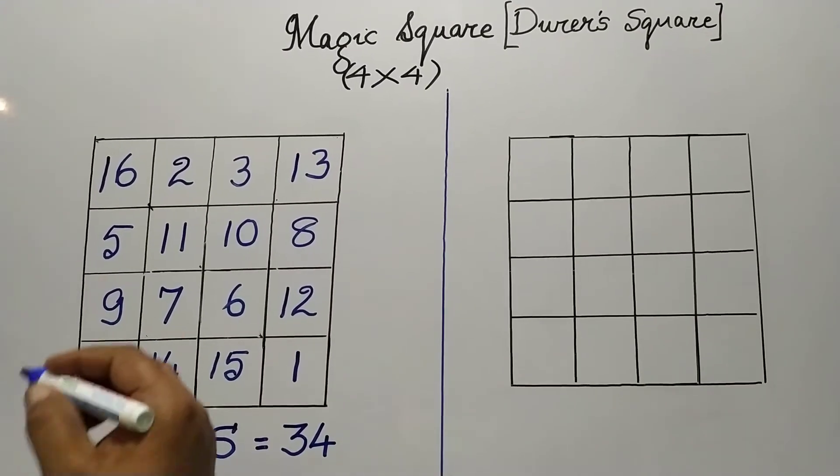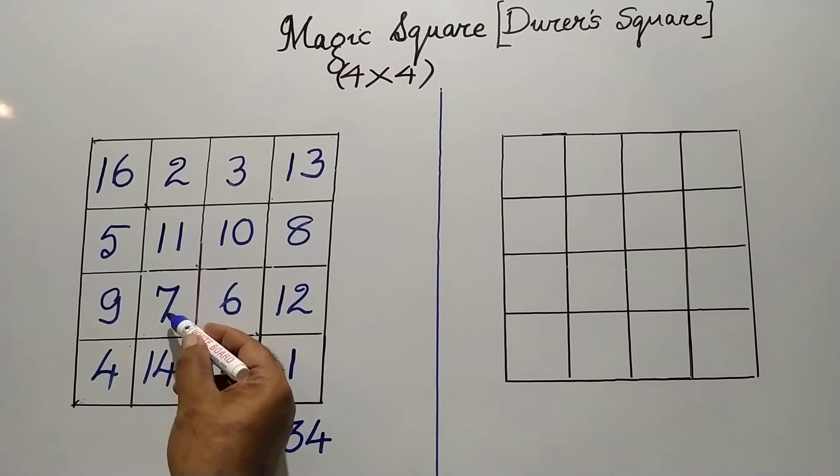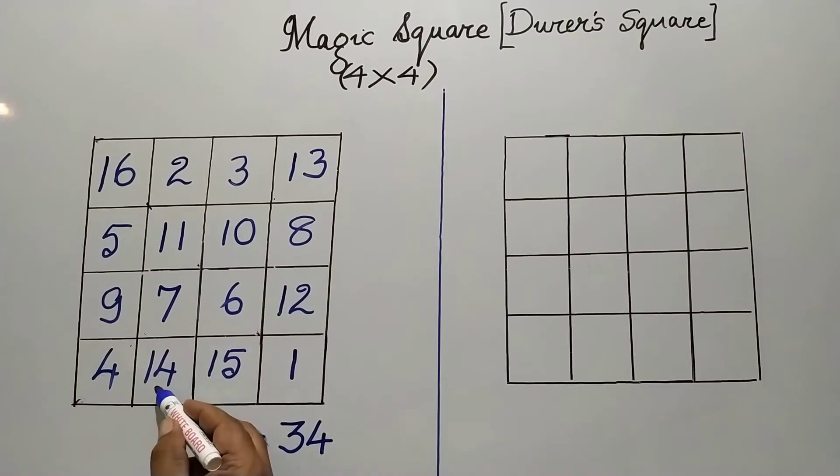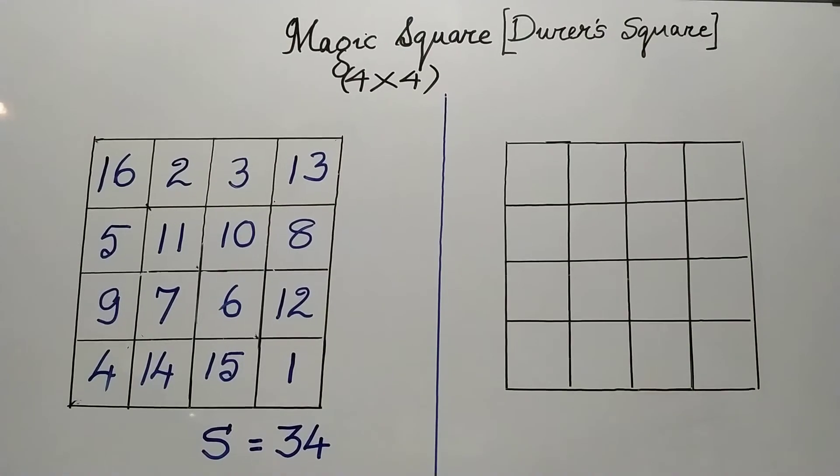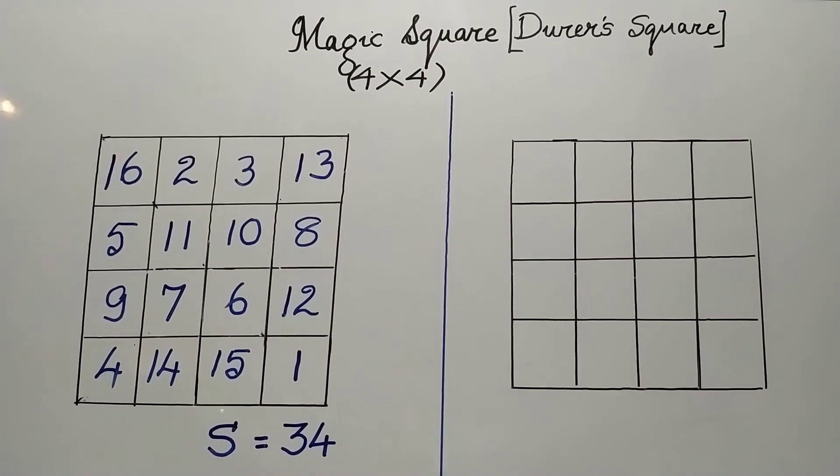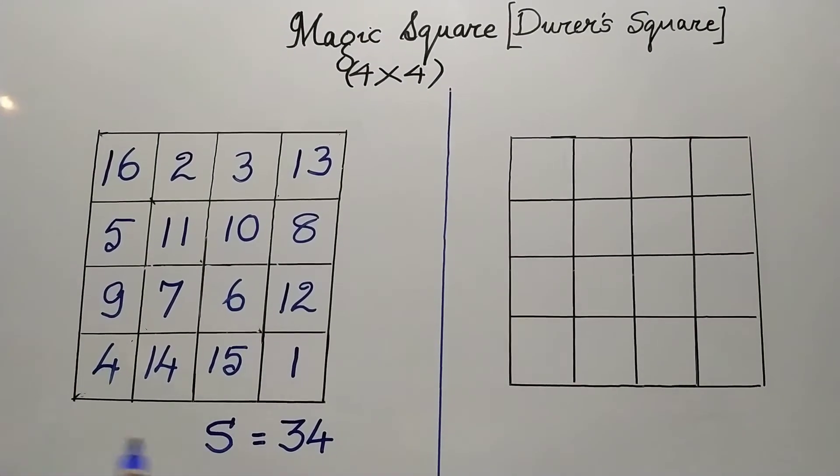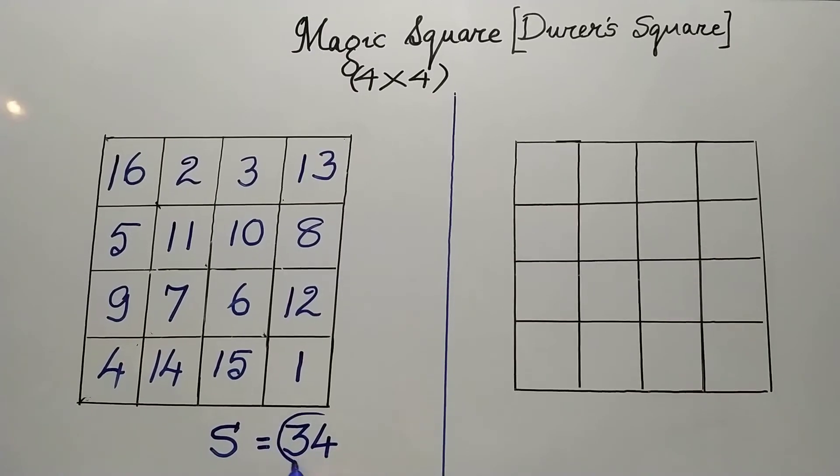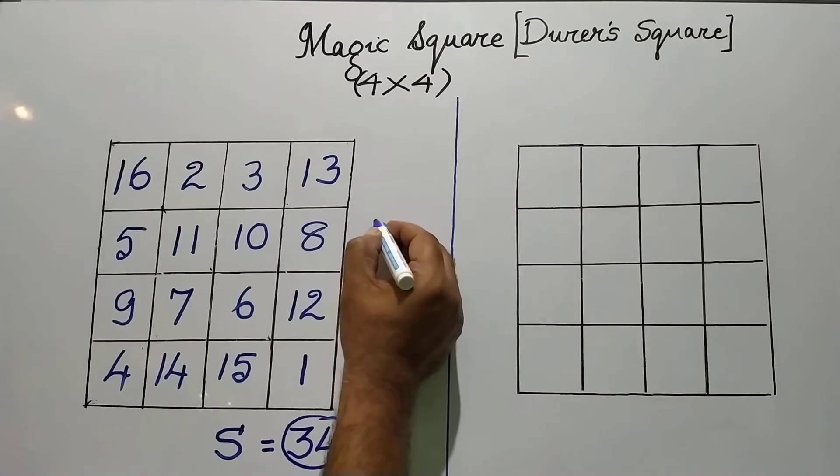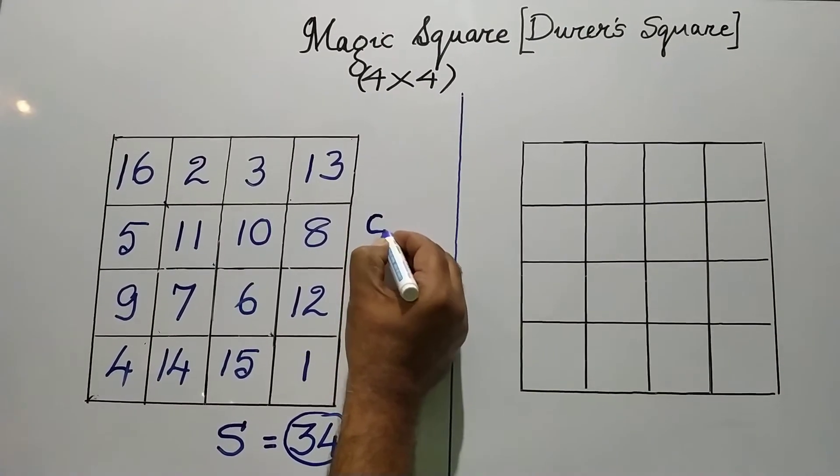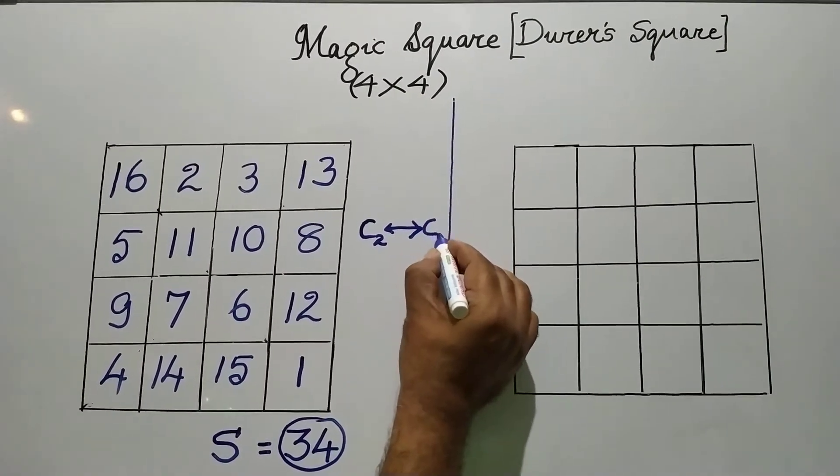Let us check the second column. 2 plus 11, 13 plus 7 is 20 plus 14 is 34. This is the 4 by 4 magic square. What we will do from this magic square, which has the magic sum as 34, is a small change. What we will do is the second column and the third column, we will interchange.